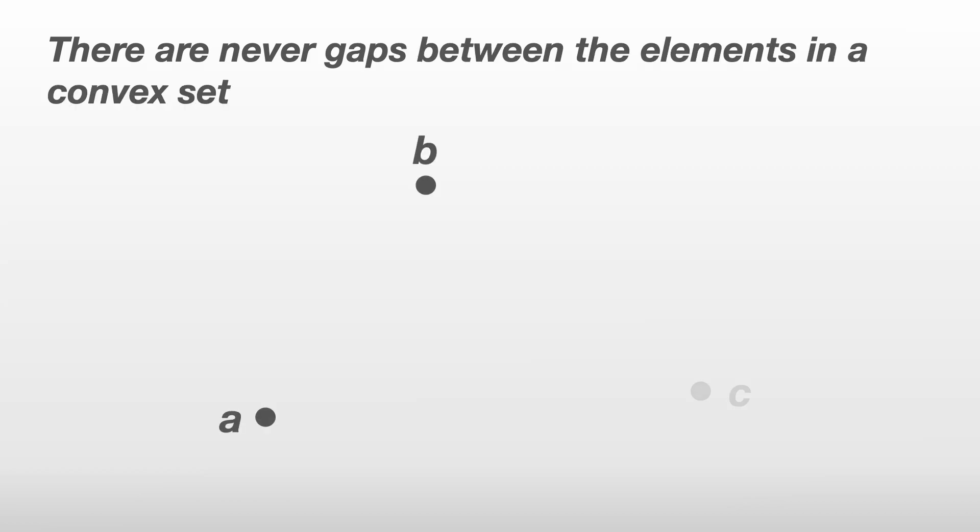Here's an interesting property of convex sets I like to call the no-holes property. There are never any gaps between the elements in a convex set. To demonstrate this, let's take three elements a, b, and c of a convex set. Because this set is convex, then the points along the lines connecting them must also be in the set.